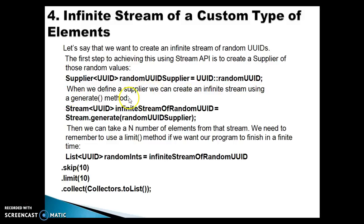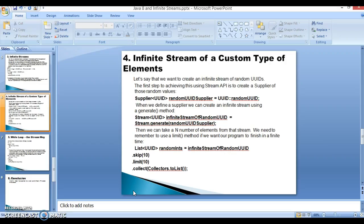When you define a supplier, we can create an infinite stream using the generate method. In the Stream class you have a generate method, and here you are passing the reference of the random UUID supplier. Then you can take N number of elements from that stream — we need to remember to use a limit method if you want the program to finish in a finite time. From the infinite stream of random UUIDs, you call skip specifying value as 10, then limit to 10 elements, and finally call the terminal method collect to convert into a list.